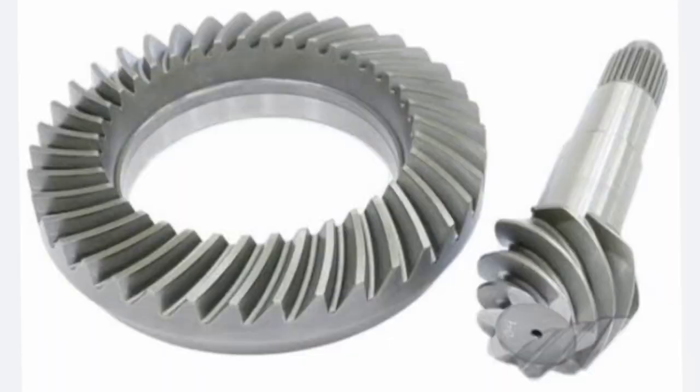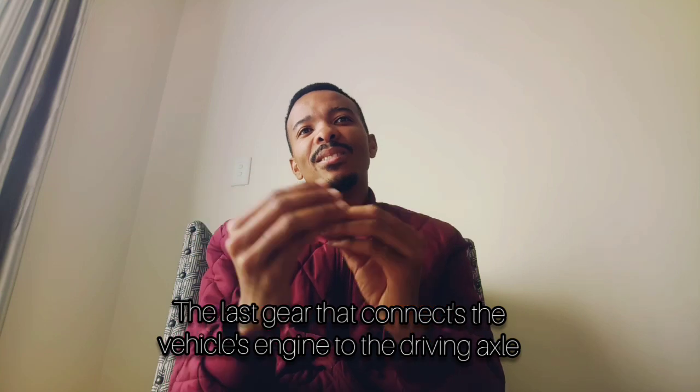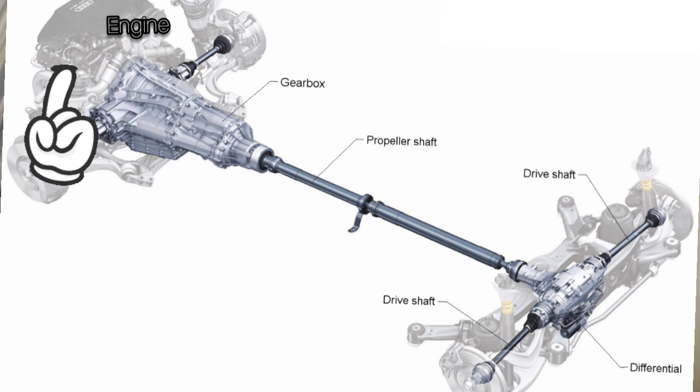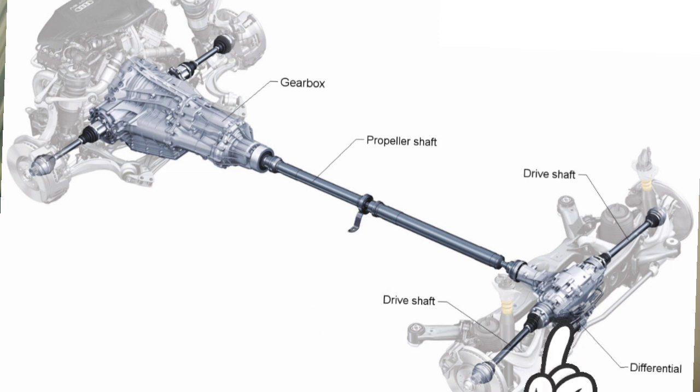Today the first topic we will start with, before we do the differential, is the final drive. What is the final drive? The final drive is the last gear that connects the vehicle engine to the driving axle. If this is the engine, the gearbox, then the propeller shaft, then the differential — the final drive is inside the differential. Most people have a tendency of confusing the final drive with the differential.